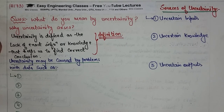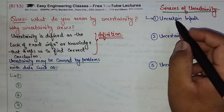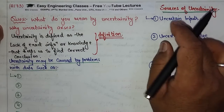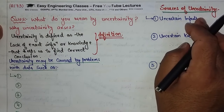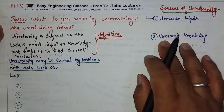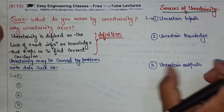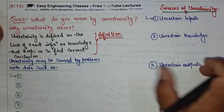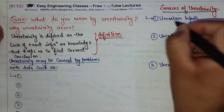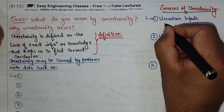What are the sources of uncertainty? The three sources are: uncertain inputs, uncertain knowledge, and uncertain outputs.